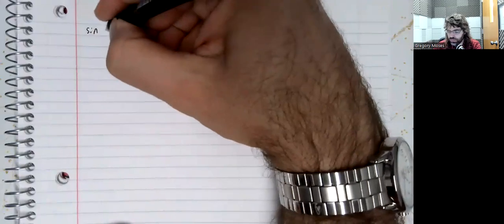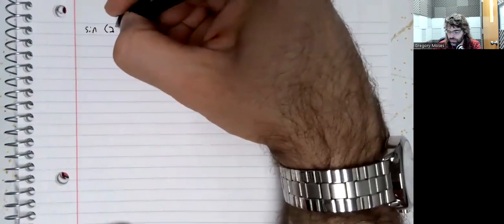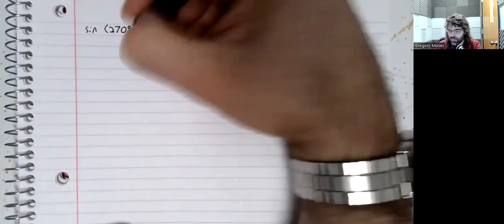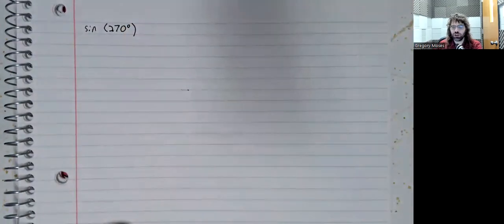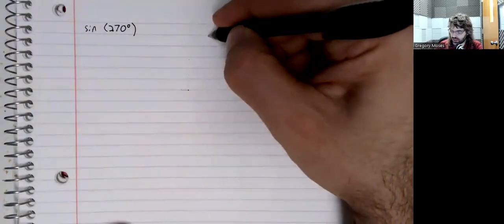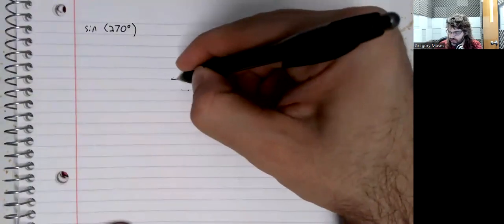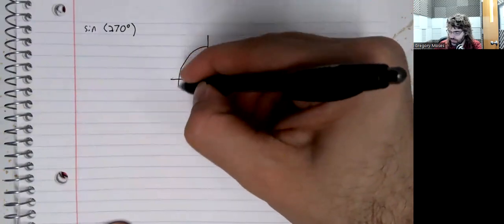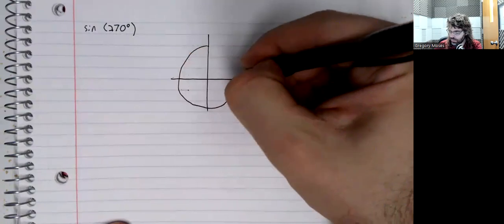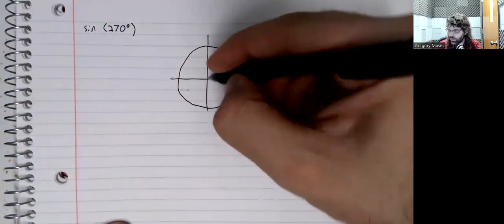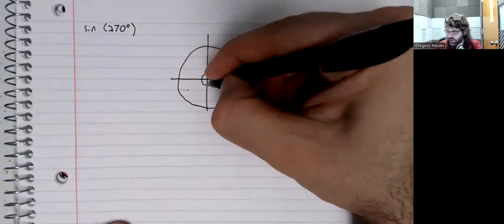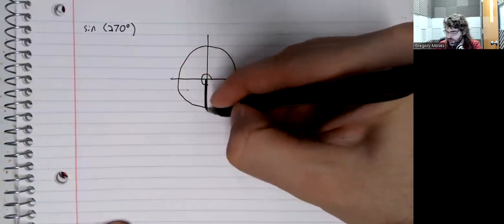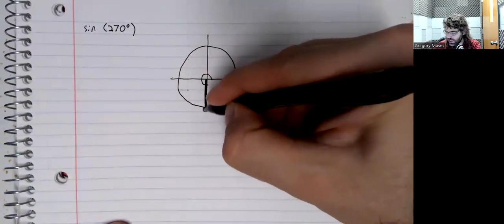let's look at the sine of 270 degrees. So we'll draw our circle. 270 degrees brings us down here.